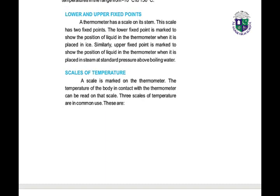We can check the lower and upper fixed points. A thermometer has a scale on its stem with two fixed points. The lower fixed point is marked to show the position of liquid in the thermometer when it is placed in ice. The upper fixed point is marked to show the position of liquid when it is placed in steam at standard pressure above boiling point. There are different scales of thermometer.